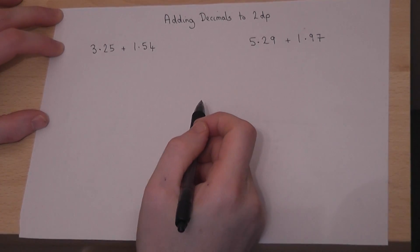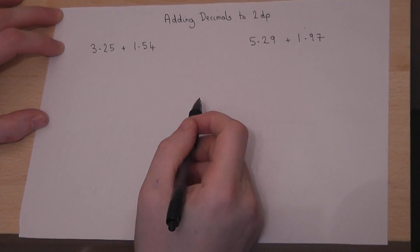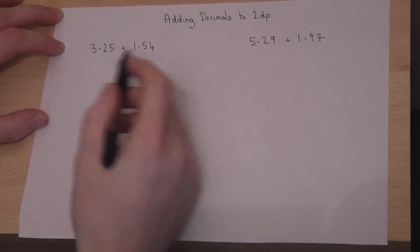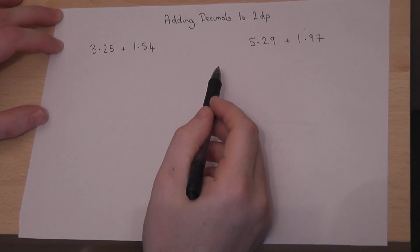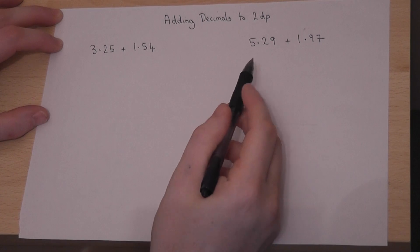This video looks at how to rather quickly add together two decimals which are both to two decimal places. So what we do is we line up the two numbers one above the other.